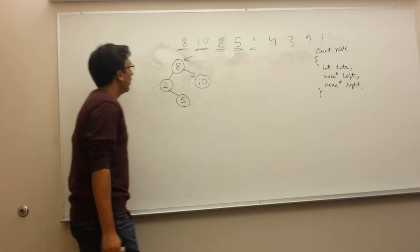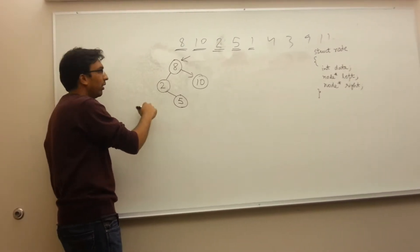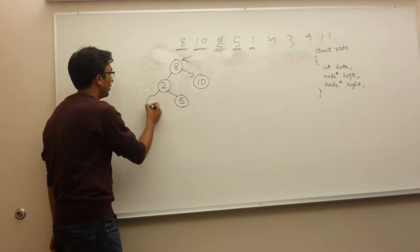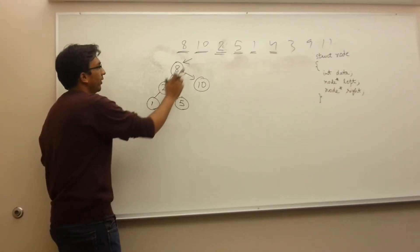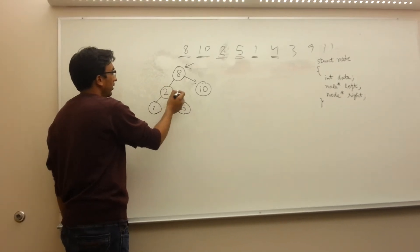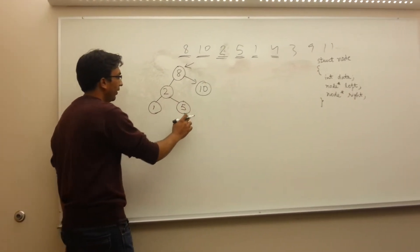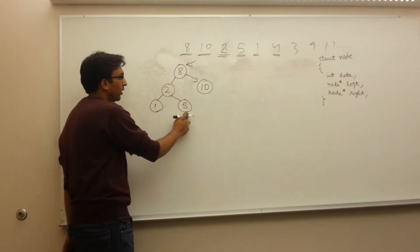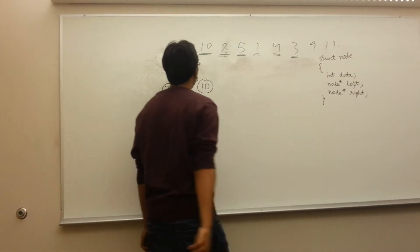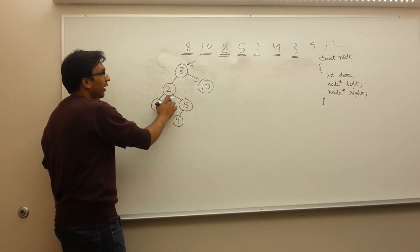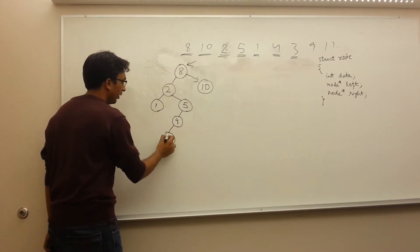Now we go to 1 — we compare with the root, 1 is smaller than root so it goes left, then it is smaller than 2 so it goes left again. Since there is no element on the left of 2, we insert it directly. Now we go to 4 — 4 is smaller than 8, goes left; it is larger than 2, so it goes right. Since right is filled, we compare 4 with 5 — since 4 is smaller than 5, it goes to the left of 5. Now we go to 3 — 3 is smaller than 8, bigger than 2, smaller than 5, smaller than 4, so it goes to the left of 4.